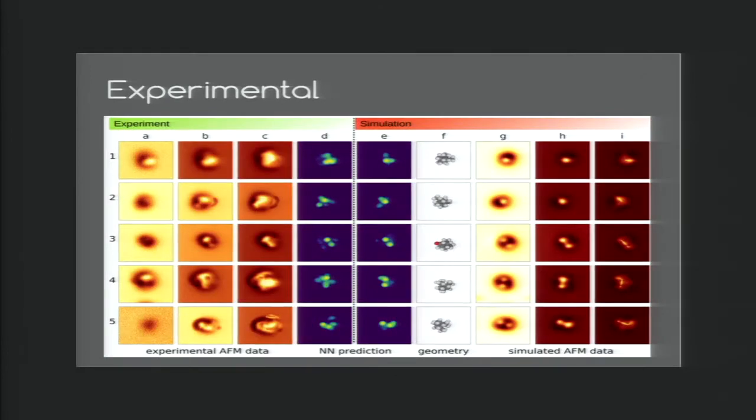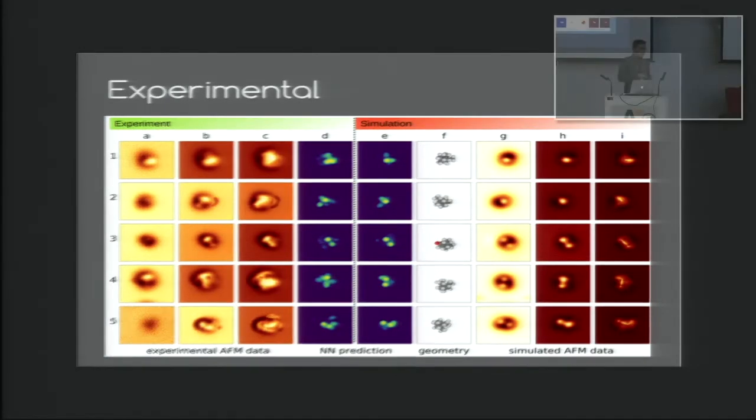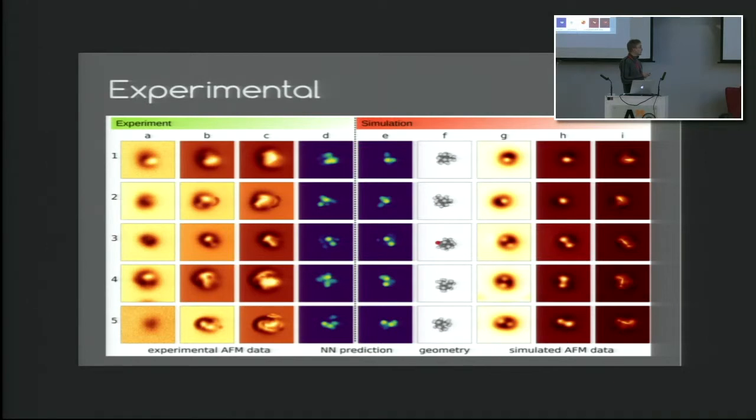And then the question is, of course, can we do this on real experimental data? With experiments, the problem is, of course, that we don't know what the correct label should be. So what we do instead is calculate this descriptor for experimental data. We have here five different experiments on this PTCDA molecule.